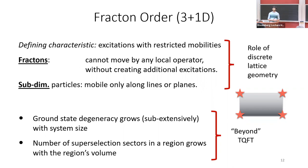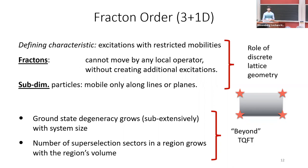What is quite strange about these models is that the ground state degeneracy depends on the system size. This is clearly something beyond what's allowed in a TQFT — in a TQFT, the ground state degeneracy should only depend on the global properties, the topology of the manifold. But in these systems, the ground state degeneracy depends on the system size, and this is a robust degeneracy. You cannot break it just by adding local perturbations to the Hamiltonian.